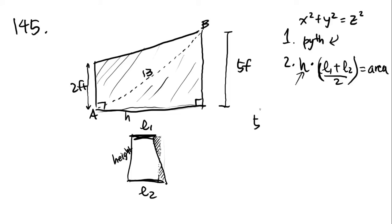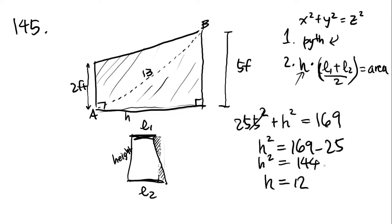5 squared plus this mysterious side equals 13 squared, and 13 squared is 169. 5 squared is going to be 25. So, what you then have is h squared equals 169 minus 25 equals 144. Take the square root of both sides and you get h equals 12. 12 times 12 is 144.